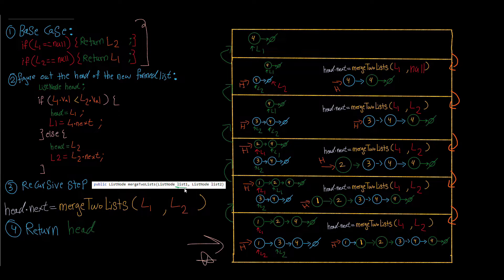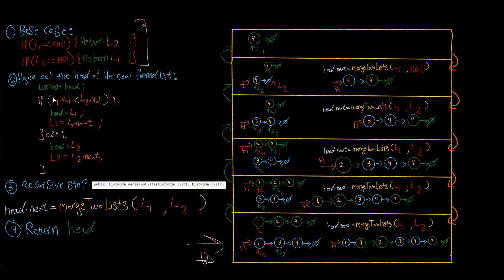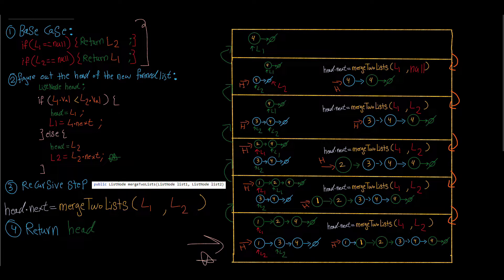We want to figure out the head of the new sorted linked list. List one and list two are given as parameters — two pointers. We compare list one dot value with list two dot value. They are equal so the if-statement is false and we go to the else. We create a head pointer; since we went to else, head will point to what list two is pointing at — node one — and then we advance list two from one to three.